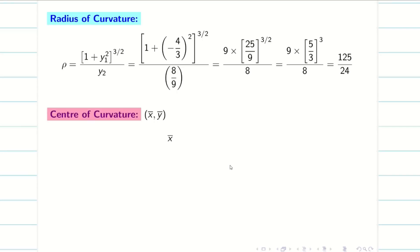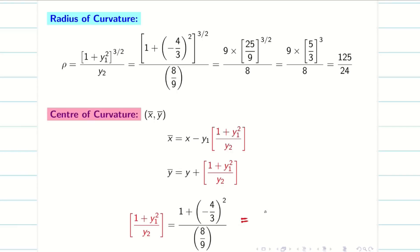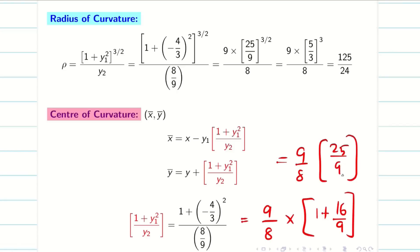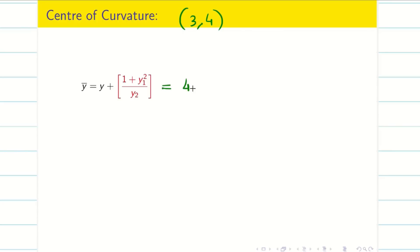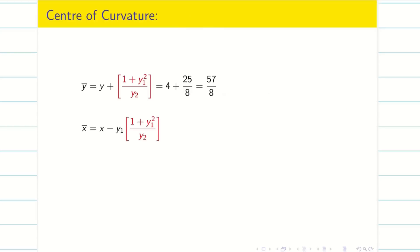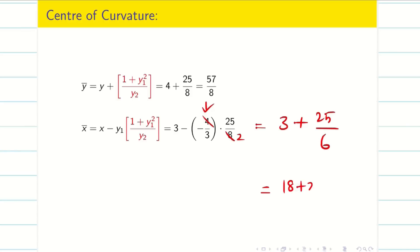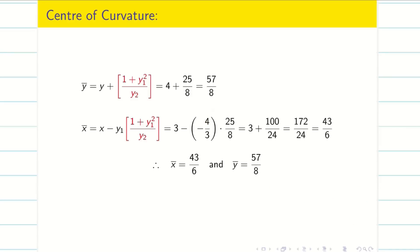For the center of curvature, first compute (1 + y₁²)/y₂ = (1 + 16/9)/(8/9) = (25/9) · (9/8) = 25/8. Finding ȳ: ȳ = 4 + 25/8 = 32/8 + 25/8 = 57/8. Finding x̄: x̄ = 3 − (−4/3) · (25/8) = 3 + 100/24 = 3 + 25/6 = 18/6 + 25/6 = 43/6. So the center of curvature is (43/6, 57/8).